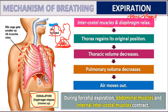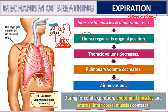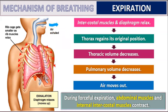As the muscles — including the internal intercostal muscles and the diaphragm — relax, the thoracic volume decreases back to its original position. So pulmonary volume also decreases, and as a result, air moves out. During forceful expiration, the abdominal muscles and the internal intercostal muscles also contract.